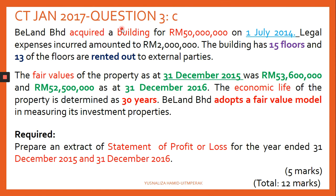Next is question 3C. Company B Land Berhad acquired a building for $50 million on 1st July 2014. Legal expenses — such as the SPA agreement and costs paid to legal advisors — amounted to $2 million. So the initial cost is not $50 million; it should be $50 million plus $2 million, totalling $52 million. The building has 15 floors, and 13 of those are rented out to external parties, indicating it is an investment property.